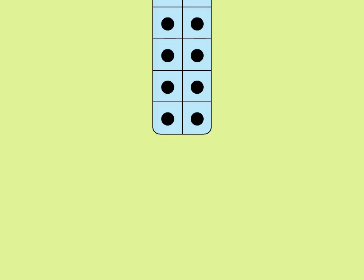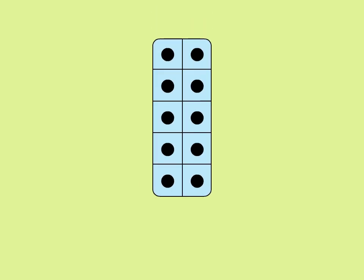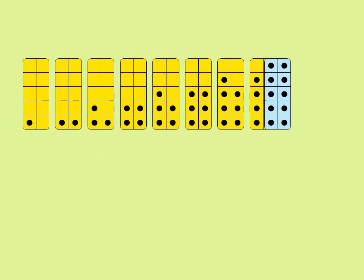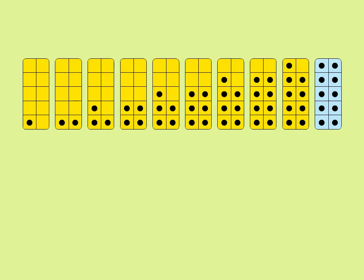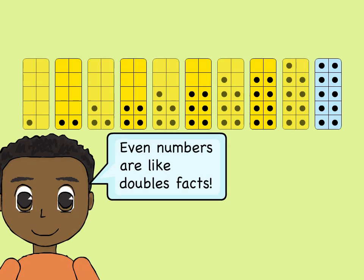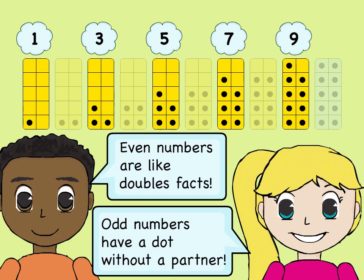Counters in 10-Frames show each number in relation to 10. Setting counters or dots in pairs helps children see even and odd numbers. This way they understand what makes a number even or odd.